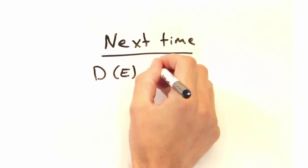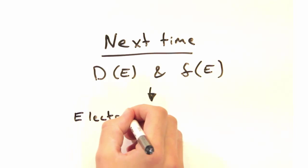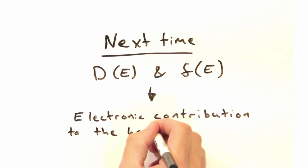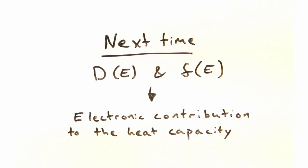Next time, we'll use our understanding of density of states and the Fermi-Dirac distribution to investigate the electronic contribution to the heat capacity. See you then!